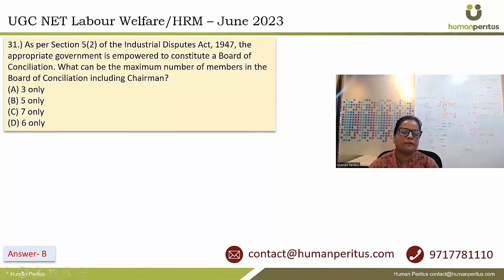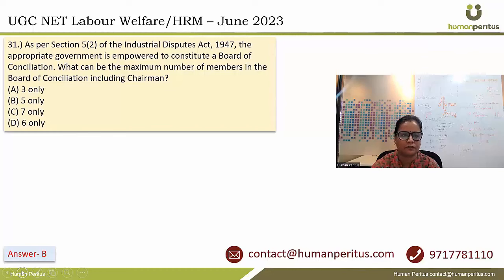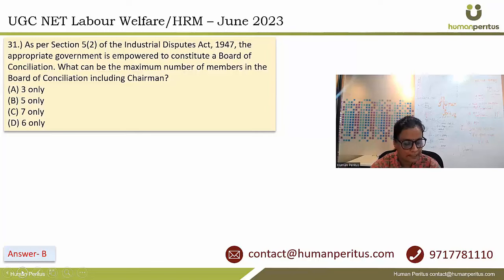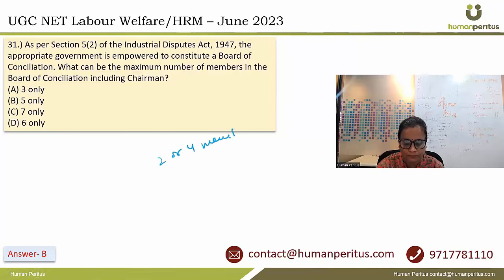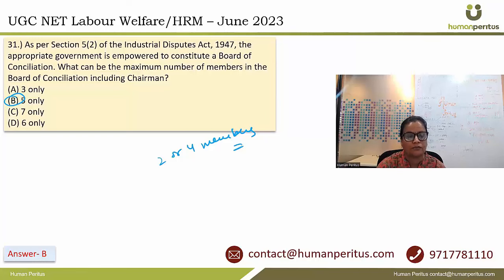As per Section 5(2) of the ID Act, the appropriate government is empowered to constitute a Board of Conciliation. What can be the maximum number of members including the chairman? The act says the board shall consist of a chairman and 2 or 4 other members. So the maximum number can be 5. Answer is option B.